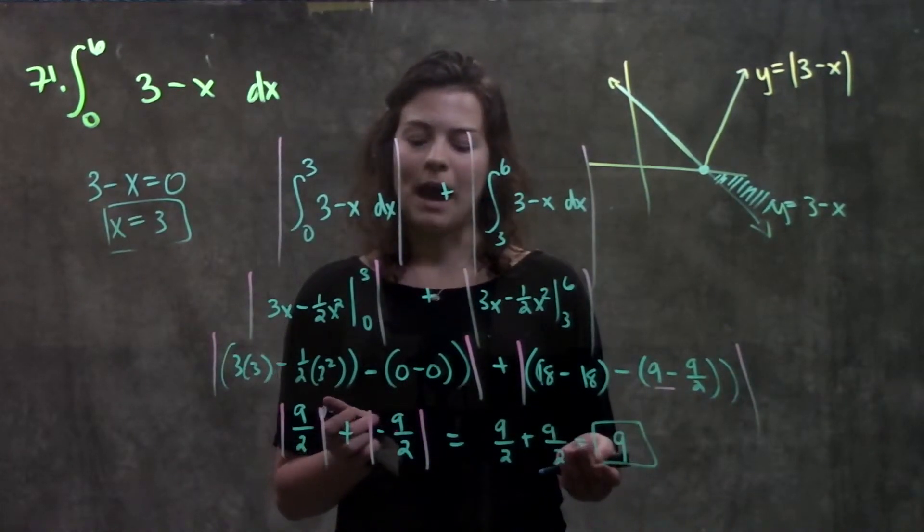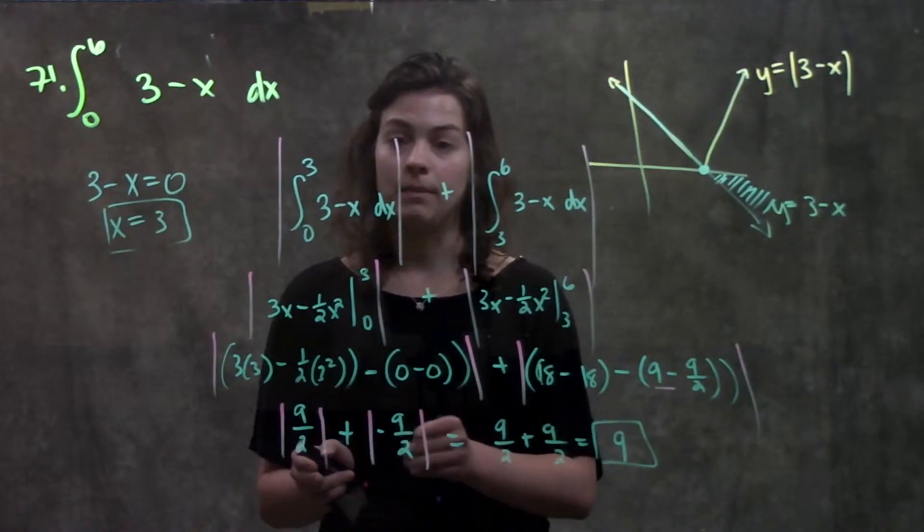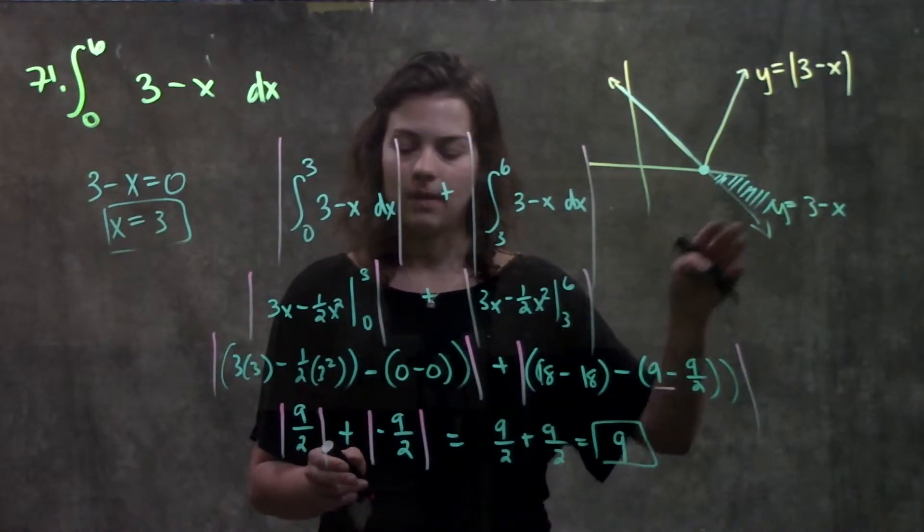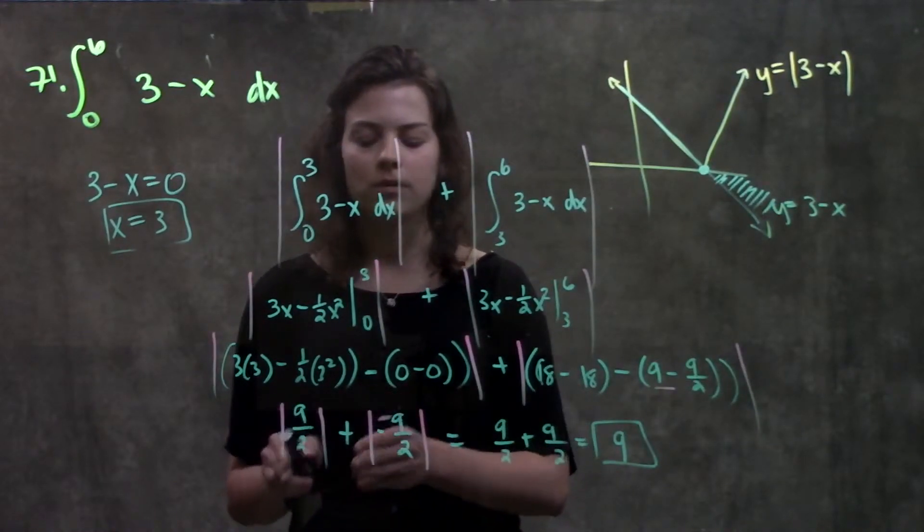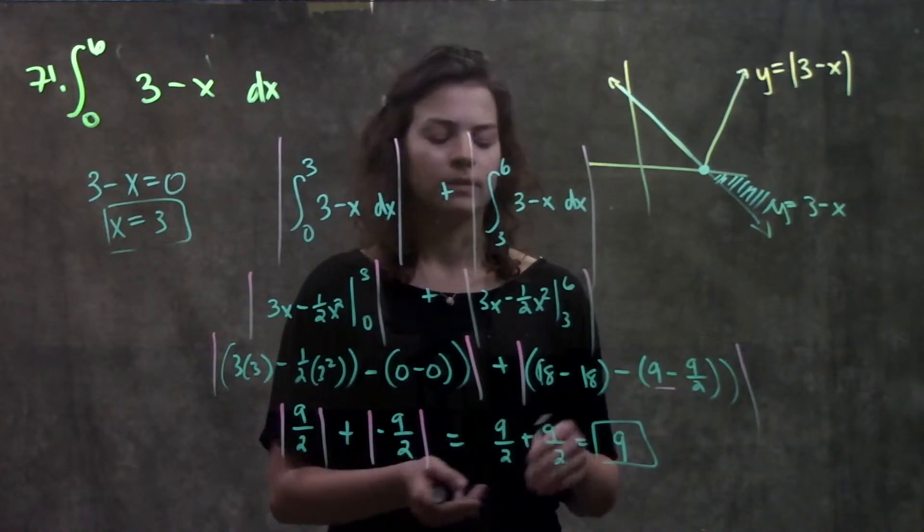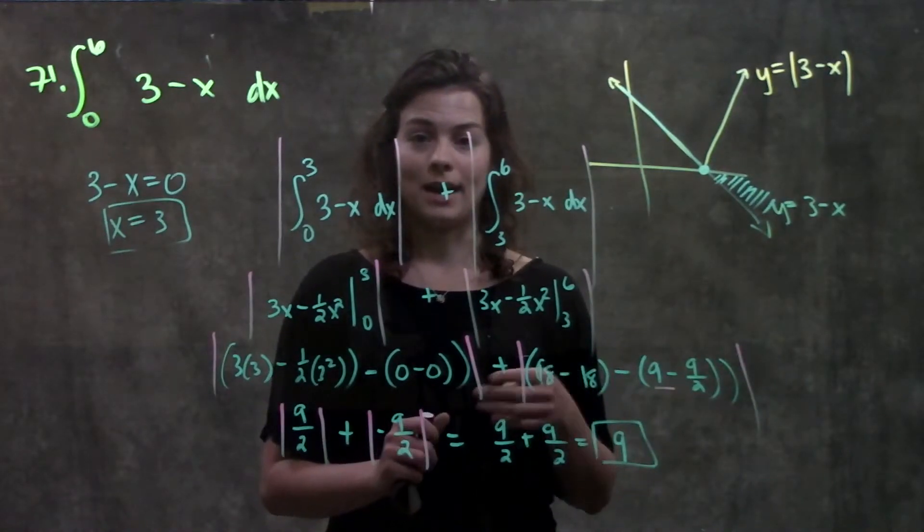Which is what I wanted to happen, right? I knew one of these parts would become negative, would have a negative area. But because I had absolute values in both places, I ensured that both of these sections became positive area values. And I just add them together, and I got nine.